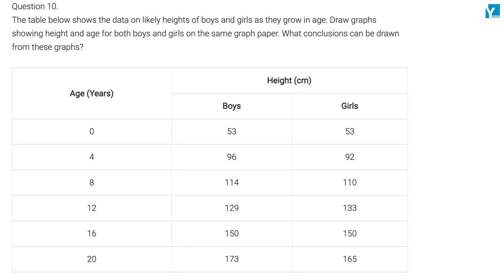The question is: the table below shows the data on likely heights of boys and girls as they grow in age. Draw graphs showing height and age of both boys and girls on the same paper. What conclusion can be drawn from these graphs?